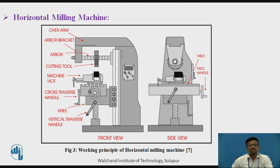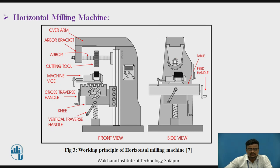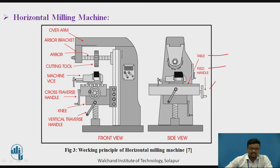The one type of milling machine we are discussing today is the horizontal milling machine. With a simple diagram and some animation, you can easily understand the different components. First, there is the work table and a feed handle — if you want to provide feed or movement to the work table or work piece, you use the feed handle. After that, there is the over arm, which provides support to the arbor bracket. The arbor is attached to the arbor bracket, and on the arbor the milling cutter is attached and rotates — the arbor acts as a spindle.